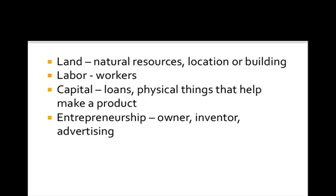And for a restaurant, land would be your location or your building. And labor would be your workers. Capital would be loans or physical things that help you make a product. So if we're talking about a McDonald's, the fry machine, a cash register, tables, silverware, things like that.